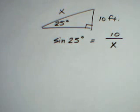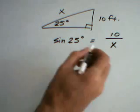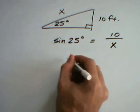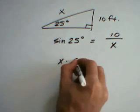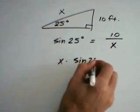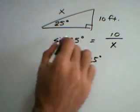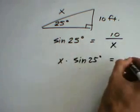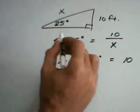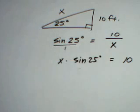And now to solve for x, we want to think of this as a proportion where we're going to cross multiply. So cross multiplying, we get sine of 25 degrees multiplied by x is equal to 10.